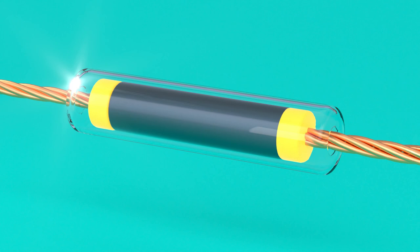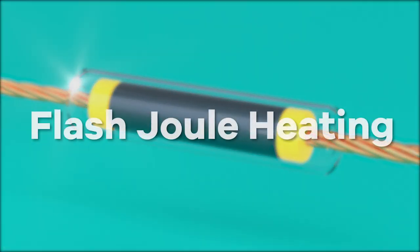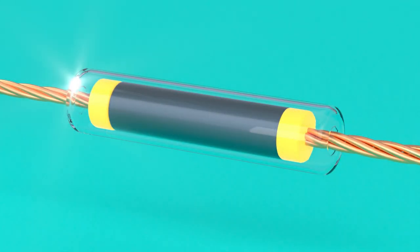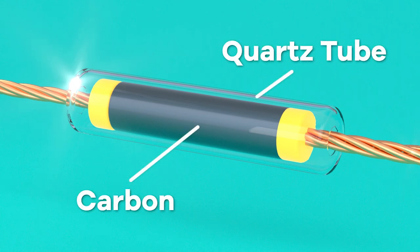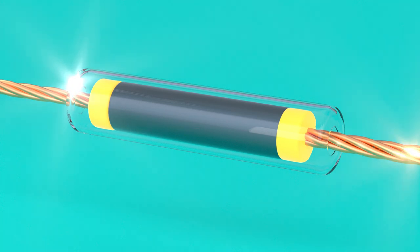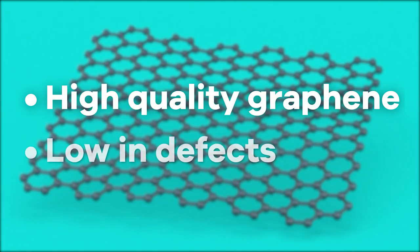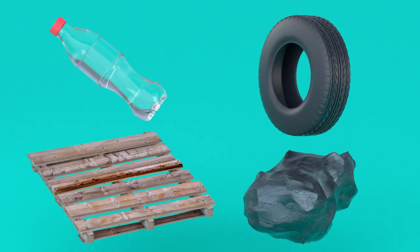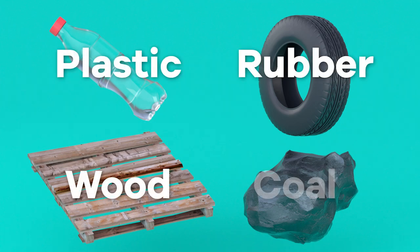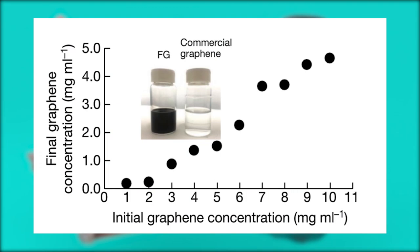Recently, experiments have been done with a method called flash joule heating. A capacitor bank is used to zap carbon powder with high voltage electricity heating it to more than 2,998 Kelvin in less than 100 milliseconds. This produces high quality graphene which is low in defects. In addition, flash graphene can be made from nearly anything with carbon in it such as plastic, wood, rubber and coal. The higher the carbon content, the easier it is to convert into graphene.